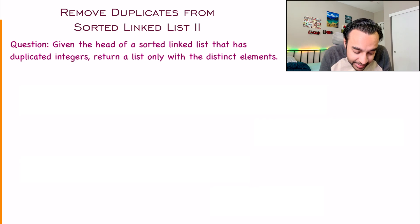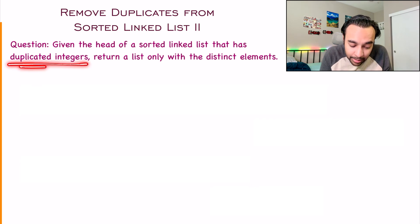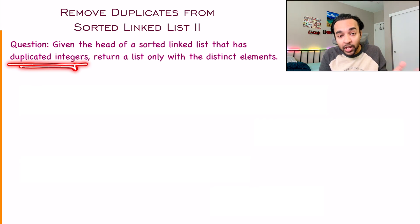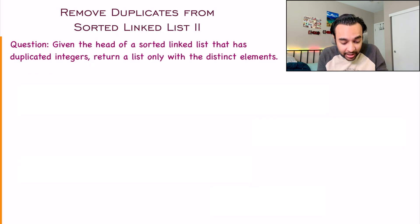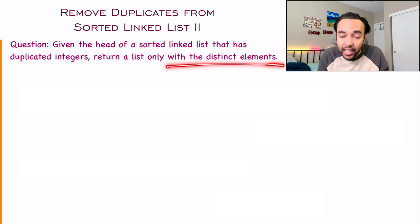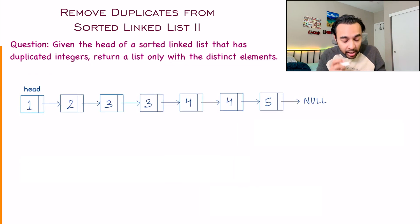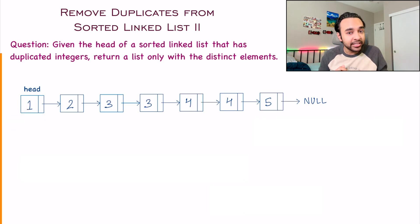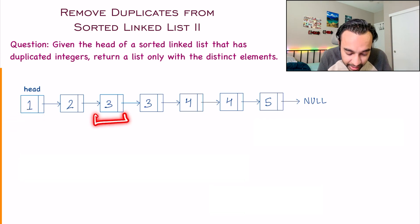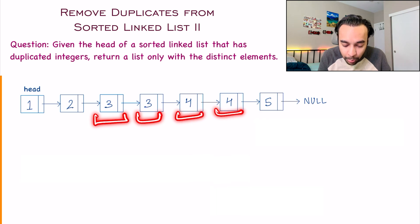This list has some duplicated integers. What you want to do is return a list that only contains the distinct elements. For example, in this test case, the number three is duplicated and the number four is duplicated.